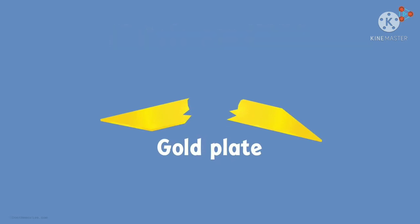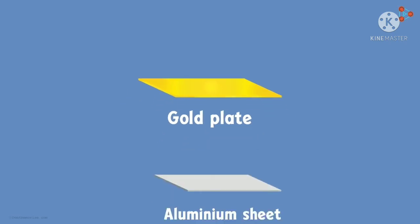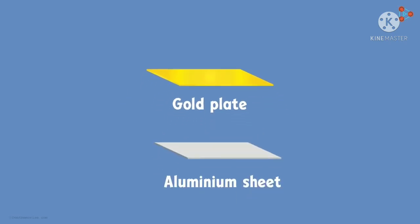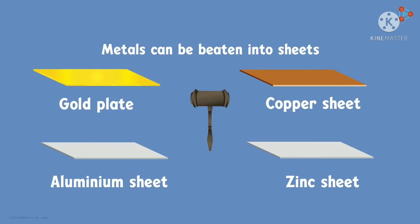Did I say plate of gold? How do you think huge aluminium sheets are made, or sheets of copper or zinc? If I take a hammer and beat them, will they break or will they turn into sheets? It is the amazing property of metals to be beaten into sheets, and we call this property of metals as malleability. Most metals can be beaten into thin sheets.